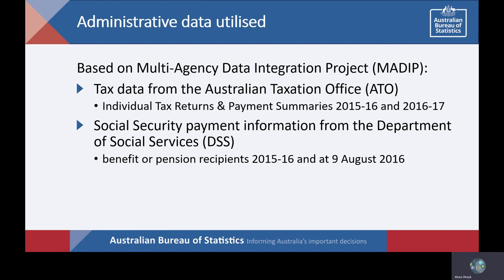Tax data from the Australian Taxation Office covers all individuals who submit an individual income tax return or receive a payment summary from an employer, and includes persons with income from one or more of a range of sources. Social Security payments information from the Department of Social Services comprises individuals who receive a Centrelink income support benefit or payment, including payments for older people, people with a disability and those caring for people with a disability, student and labour market related payments, family assistance and other payments. I would like to acknowledge the support provided to the ABS by the ATO and the DSS in compiling the data for this research. Together, the two data sources provide information for 79% of the census population aged 15 years and over, with 65% present in either tax data or Social Security data, and 14% present in both sources.